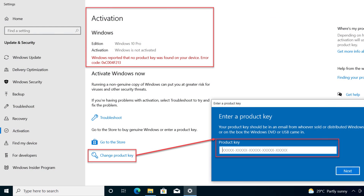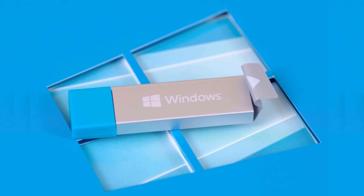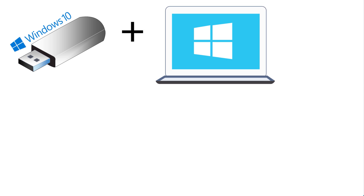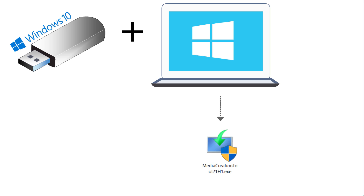Soon after the installation of Windows 10, you need to activate your copy, and for that you need to have your license key with you. If you already have a bootable USB Drive that came with your purchased copy of Windows 10 installation media, you can skip to the next section. Otherwise, you need a USB Drive to copy the installation media and another computer to download the media creation tool from Microsoft, which will help us copy the installation media of Windows 10 onto the USB Drive and make it bootable.